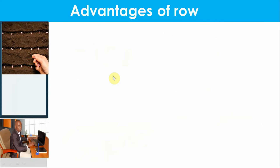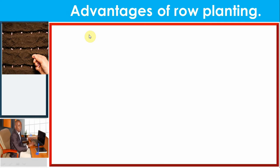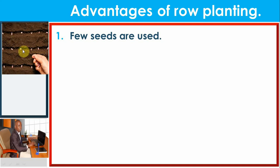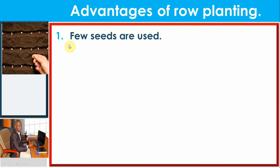One advantage is that few seeds can be used. Because there is spacing between holes, very few seeds are planted compared to broadcasting where you scatter many seeds on the surface. So even if you have a very big garden, you can buy a few seeds and be able to cover your garden.